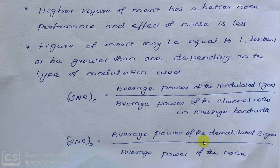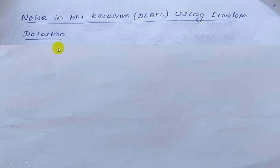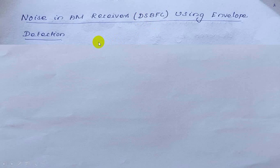The output signal to noise ratio depends upon the receiver. It is the ratio of the average power of the demodulated signal to the average power of the noise. Now we are going to discuss noise in AM receivers using envelope detection. AM contains a carrier and double sidebands, so it is also called double sideband full carrier. We will determine the channel signal to noise ratio, the output signal to noise ratio, and the figure of merit.